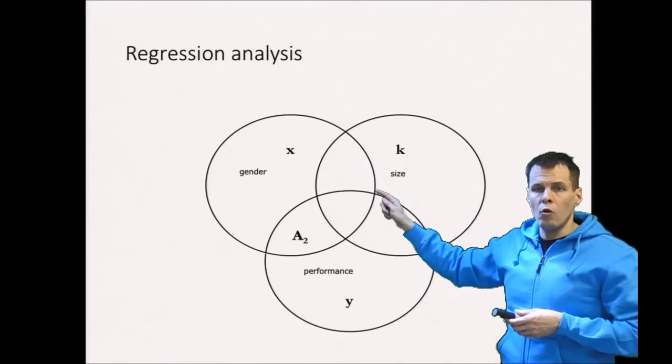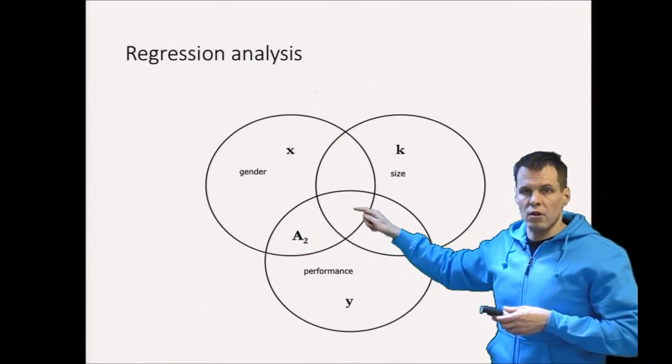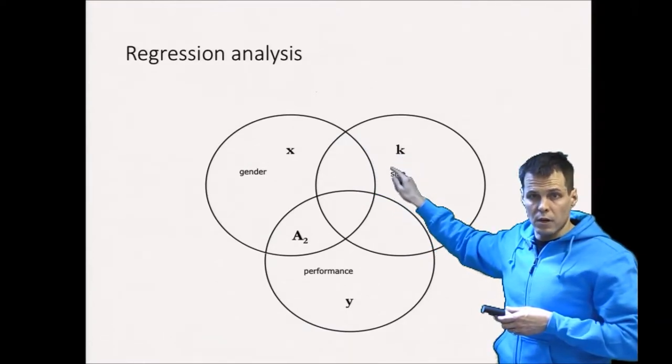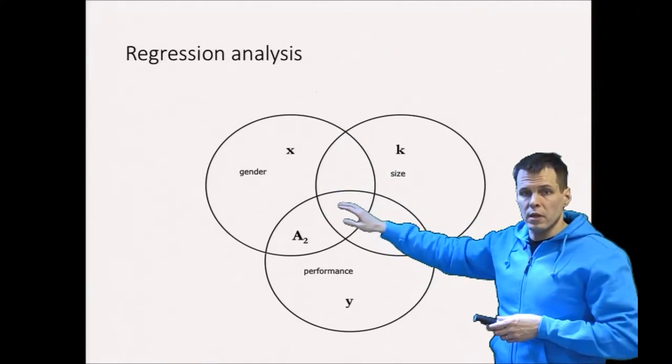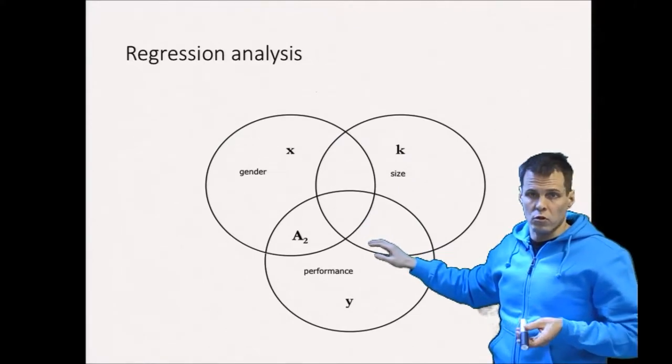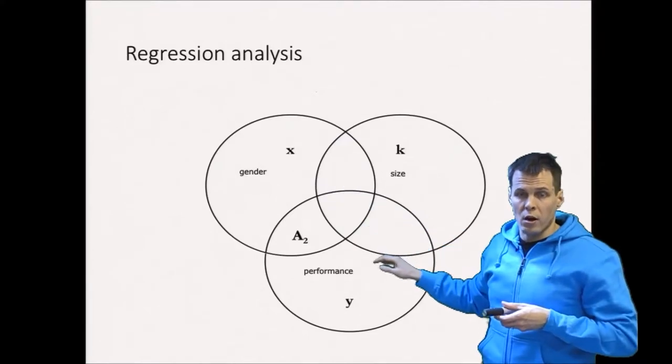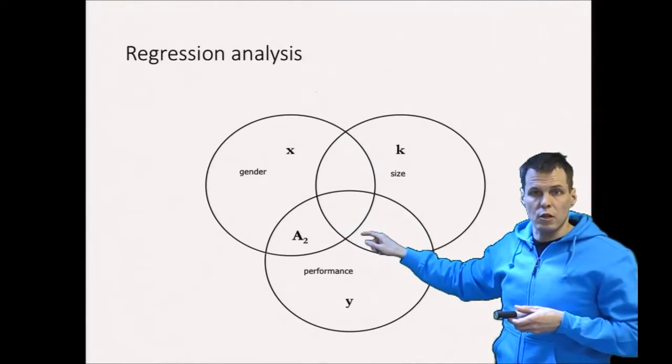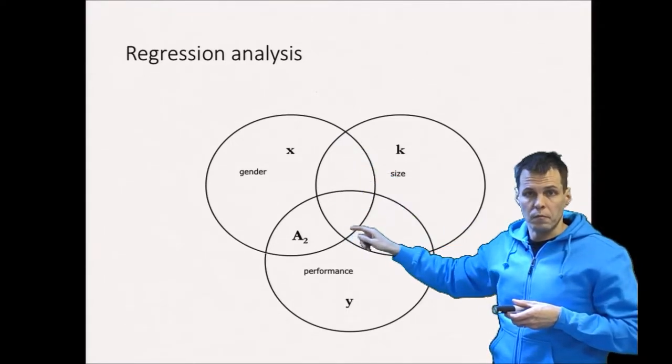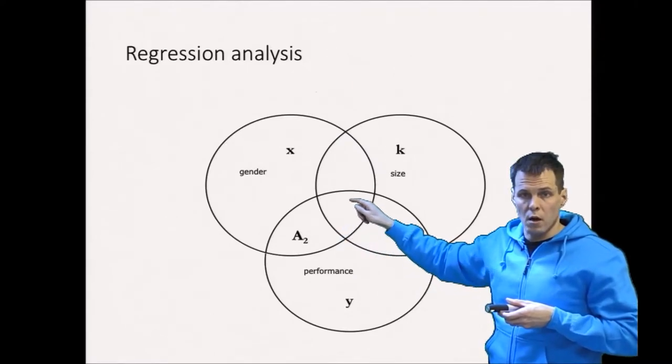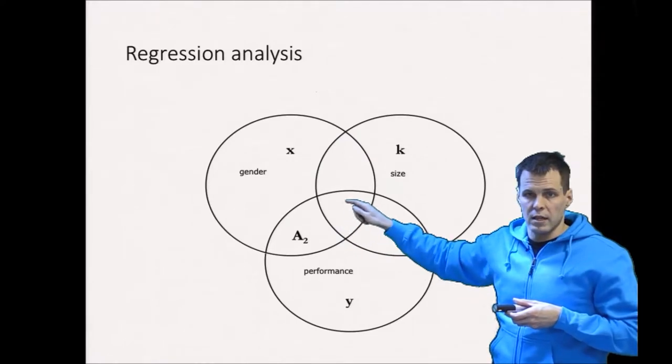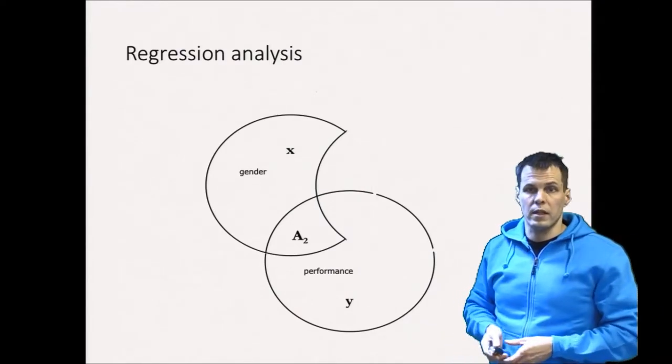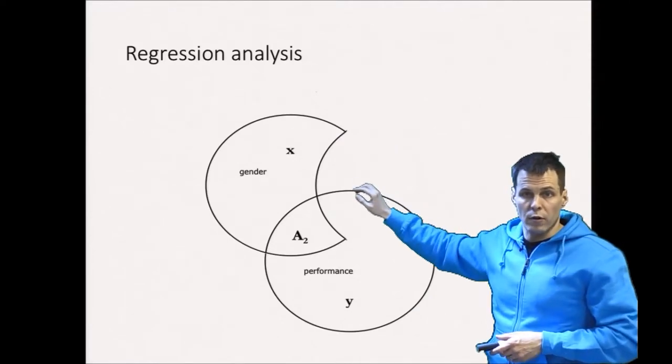Now we are interested in how much of this covariation or correlation between gender and performance is actually due to gender and how much is due to the effects of size, because size and gender are correlated. We could say that the correlation between gender and performance is partly due to presumed causal influence of CEO gender on performance and partly because smaller companies tend to be more profitable, and also because smaller companies tend to be more likely to hire women CEOs. Now we want to use regression analysis to parcel out this part that is shared by gender and size and performance to get the unique effect of gender on performance. So we could think of regression analysis as doing something like this. It eliminates the effect of company size on the relationship between gender and performance.